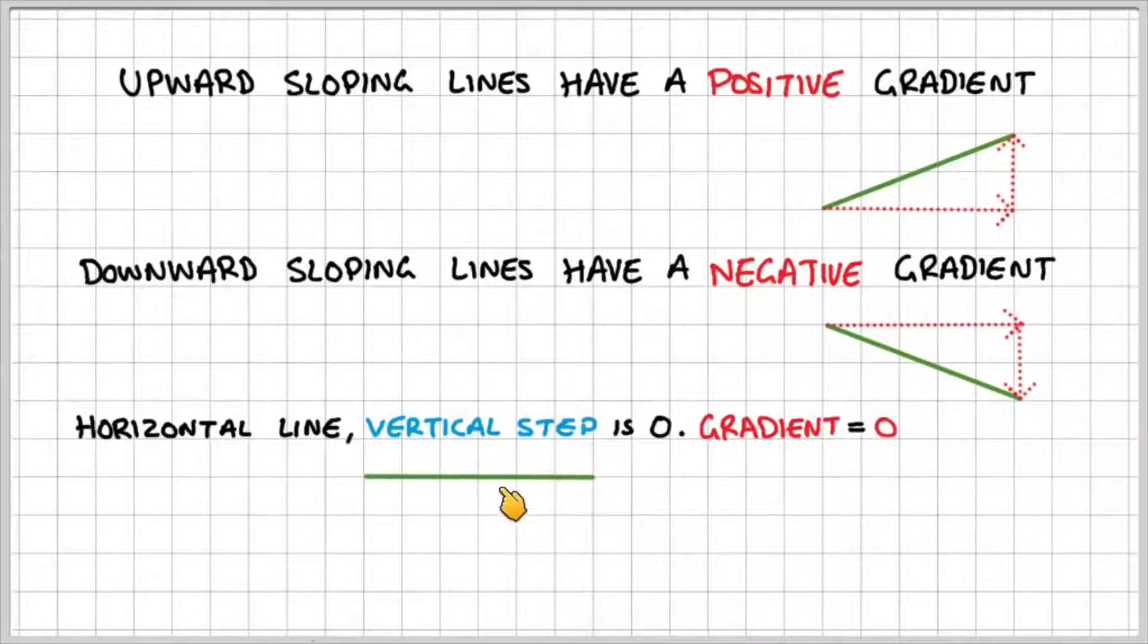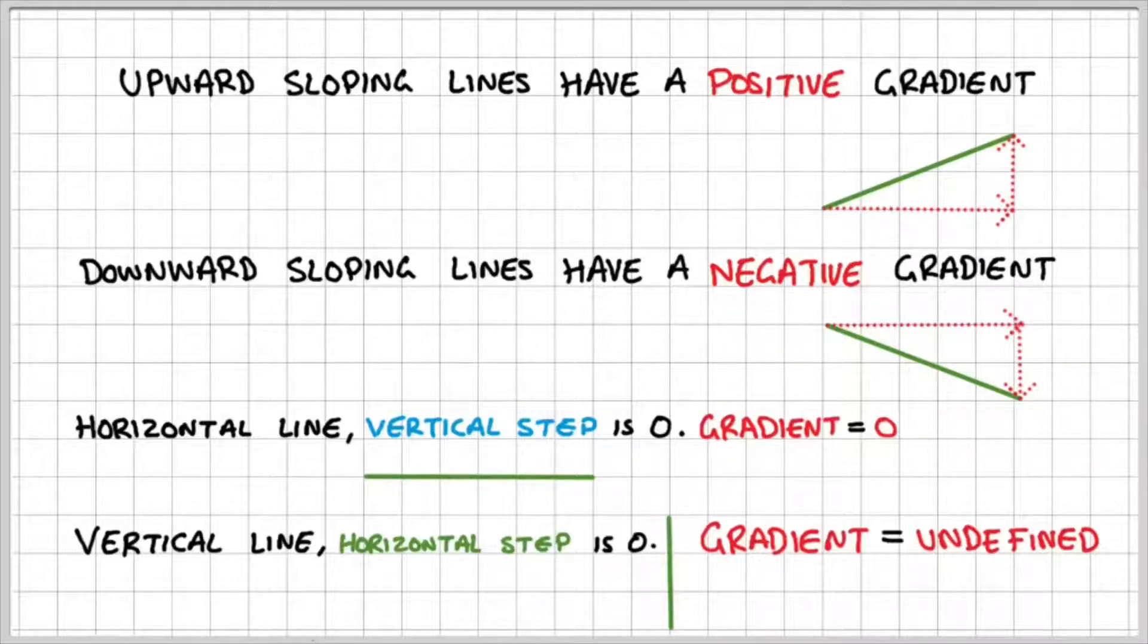If we have a horizontal line, like the one shown here, then the vertical step is 0 and the gradient is equal to 0. And finally, if we have a vertical line, like the one shown here, then the horizontal step is 0 and hence the gradient is undefined. So you might want to pause the video here and jot these into your book because these are really quite important notes for you to understand how to define a gradient.